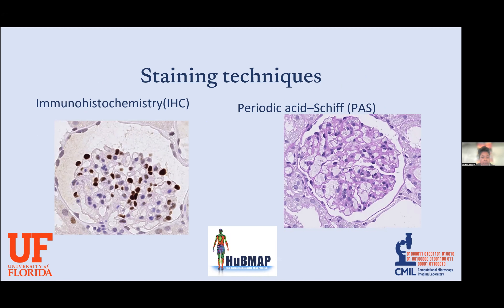During whole slide imaging there are different staining techniques. In my project I dealt with images with two different stainings: one is immunohistochemistry (IHC), which helps highlight some of the cells we're interested in — in this case podocytes — and the other is PAS, which is a much cheaper staining technique.